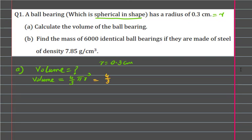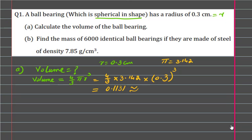Plugging in values: 4 over 3 times 3.142 times 0.3 cubed. Using the calculator, the answer is 0.1131. Rounded to three significant figures — one, two, three — the answer is 0.113 centimeter cubed. Part b: